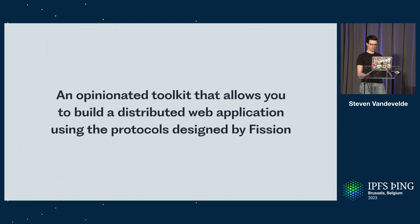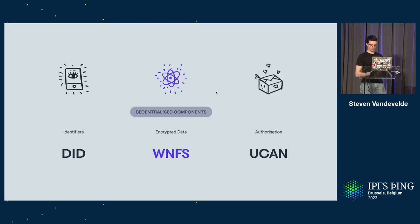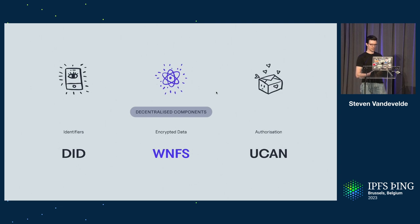What is the Auth SDK? It's a toolkit that allows you to create web applications that are offline-capable without a backend, and which are distributed. It uses all the protocols designed by Fission, the main one being WinFS. The Auth SDK app is entirely built around a user's file system. The second protocol is UCAN — without that, we don't have decentralized authorization. Thirdly, an important non-Fission protocol is DIDs, the identifiers. In the future, this will also include things like IPVM and NNS as well.